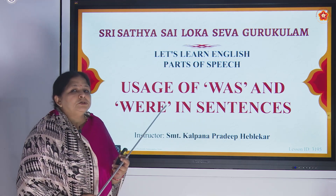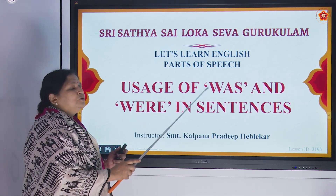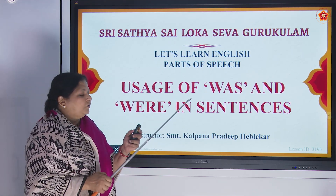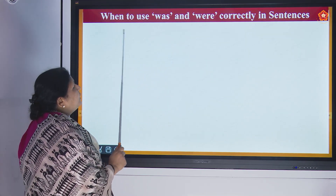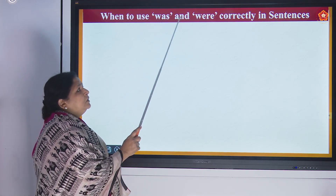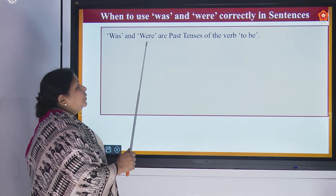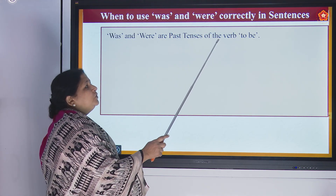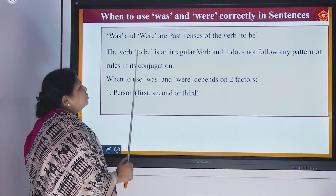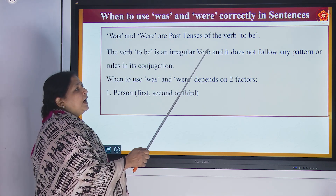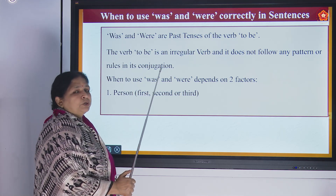We always have a doubt, like can and could, where to use was and where to use were. After this lesson you will always be thorough. Was and were are past tenses of the verb 'to be'. The verb 'to be' is an irregular verb and it does not follow any pattern or rules in its conjugation.